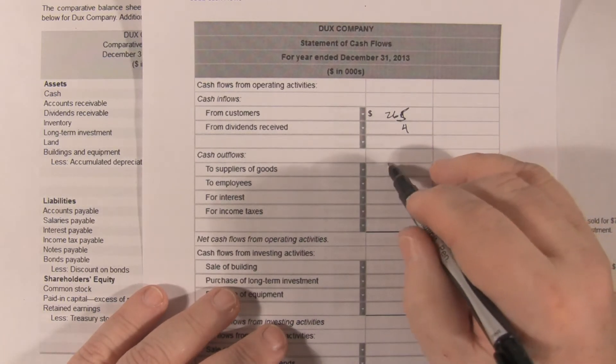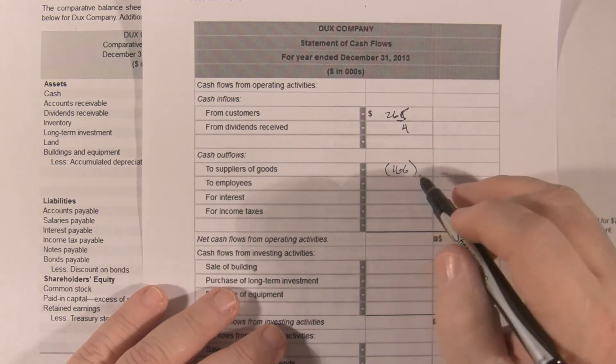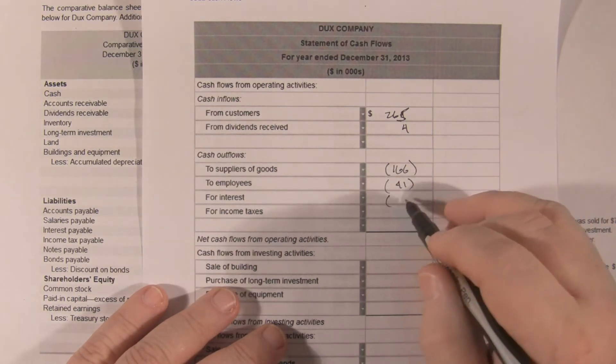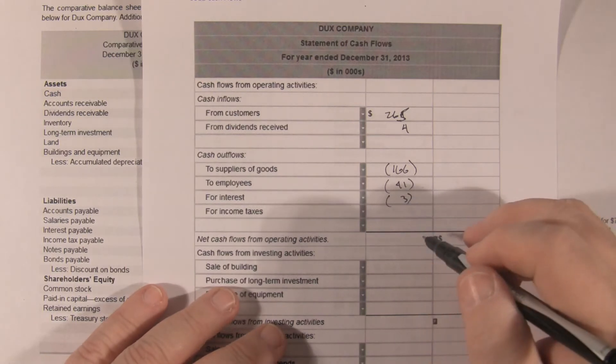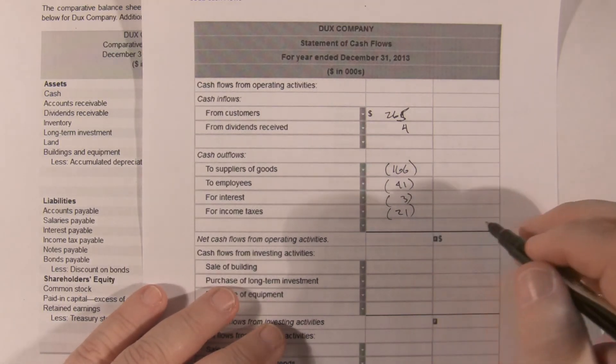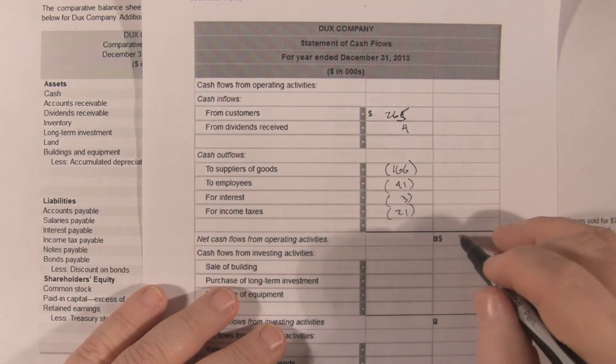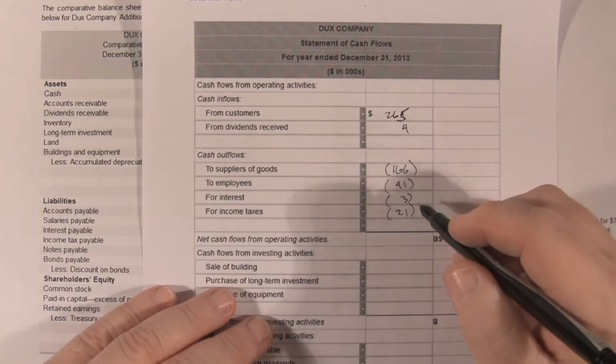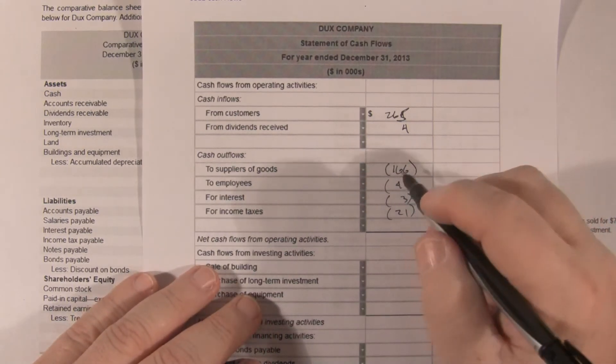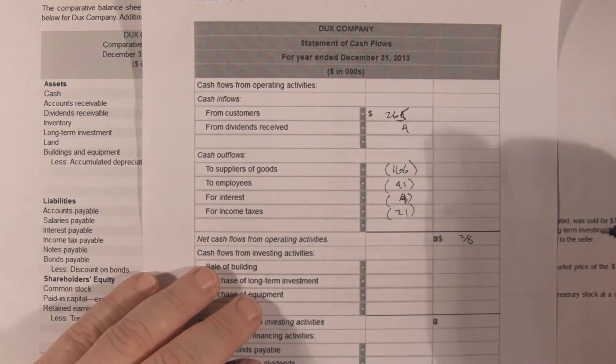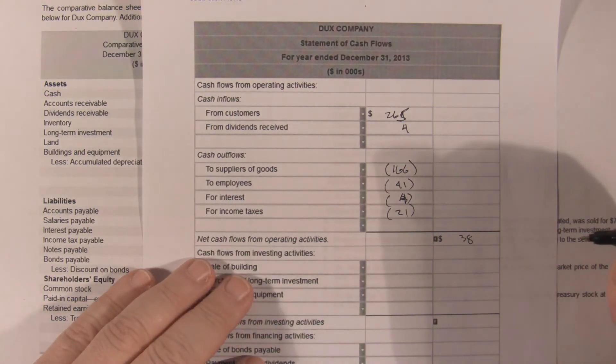To suppliers, that's 166. To employees, that's 41, that's 21 for interest, 3, for income tax, 21, for a total of 38. Okay, now that actually should be 4. So that's our net cash from operating activities.